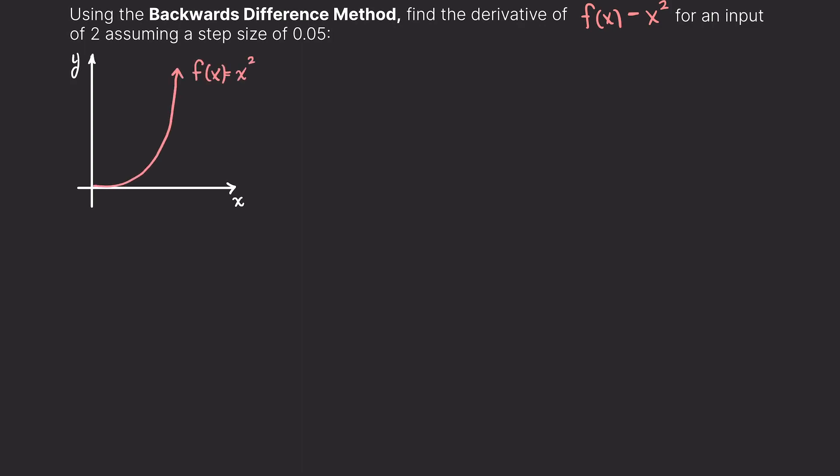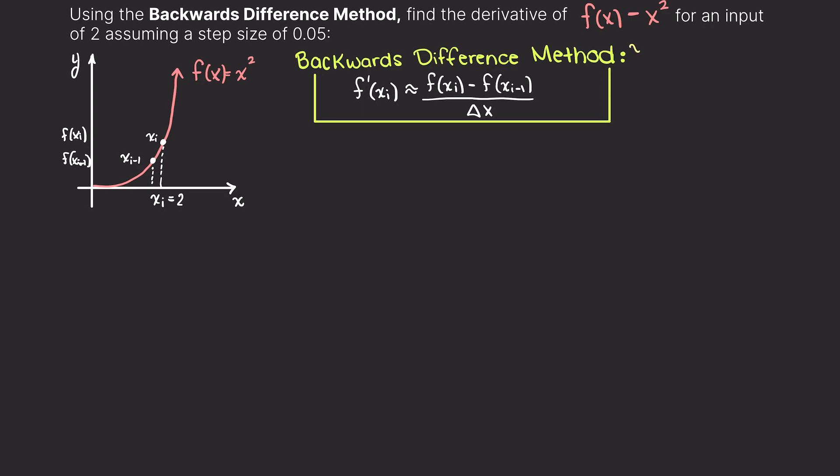Let's begin by graphing our given function and then writing out the formula for the backwards difference method that we developed in the previous video. We say that the derivative of our function is approximately equal to the finite difference between the two function outputs divided by a designated step size.